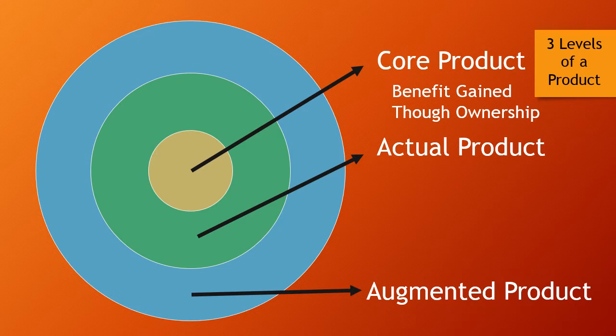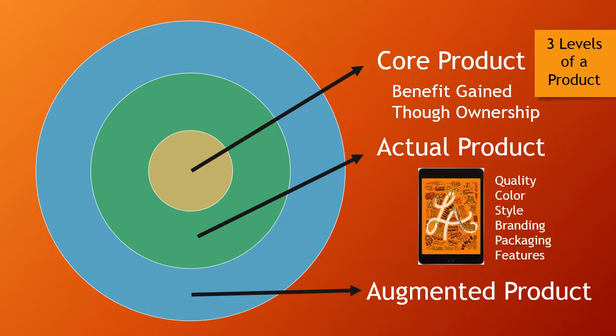The actual product is the tangible, physical aspect or good. A product planner must turn the core benefits into an actual product, developing product or service features, design and quality level, and brand name and packaging. For example, the iPad is an actual product. Its name, parts, styling, operating features, and packaging have all been carefully combined to deliver the core customer value of staying connected.